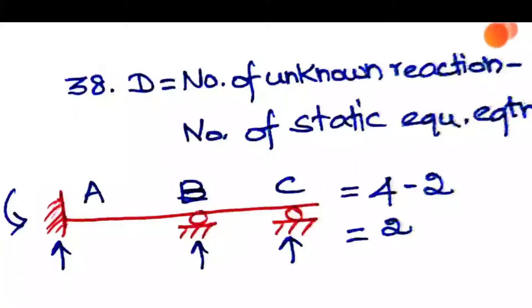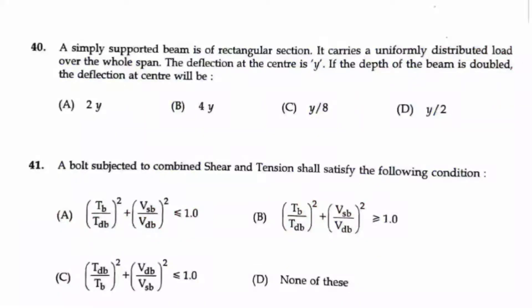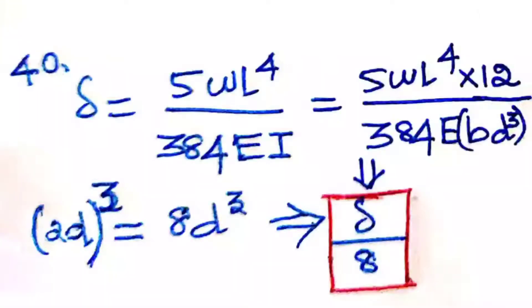Question number 40: A simply supported beam of rectangular section carries a uniformly distributed load over the whole span. The deflection at center is given as y. If the depth of the beam is doubled, the deflection at center will be what?